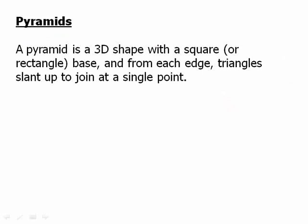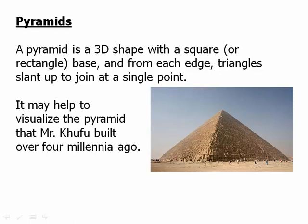A pyramid is a 3D shape with a square or rectangle at the base, and from each edge, triangles slant up to join at a single point. It may help to visualize the pyramid that Mr. Khufu built over four millennia ago in Egypt. In the general picture of geometry, the base could be anything — a triangle, rectangle, square, hexagon, or pentagon — but on the ACT you only need to worry about square-base pyramids.